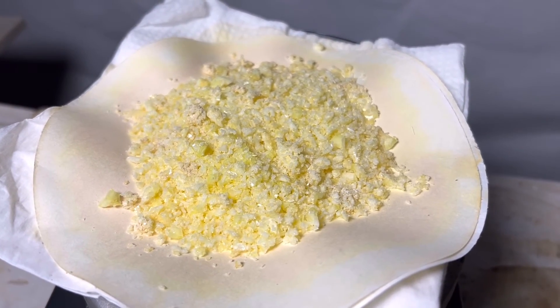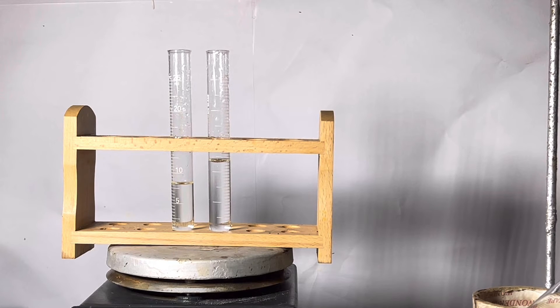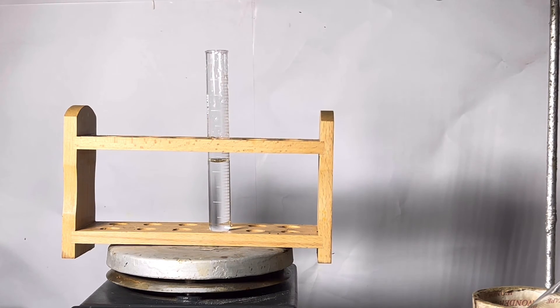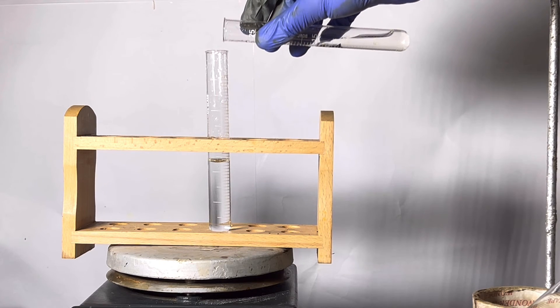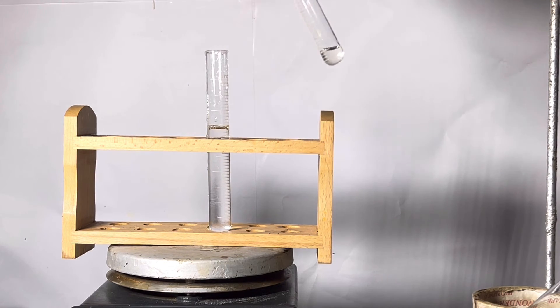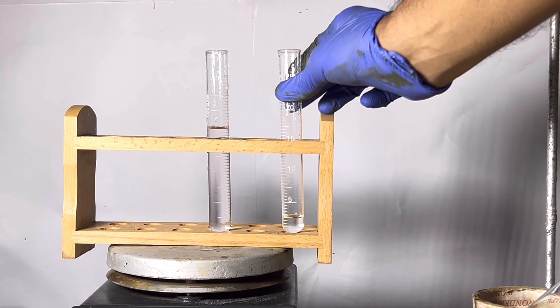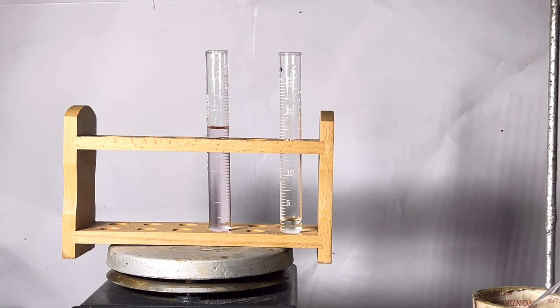We will do the basic test for confirming barbituric acid. To the left, I have sodium nitrite solution, and to the right, the presumed barbituric acid solution. The sodium nitrite solution was added to the barbituric acid solution. After a few seconds, we notice a color change to purple. This is sodium violurate being formed, confirming that the compound is indeed barbituric acid.